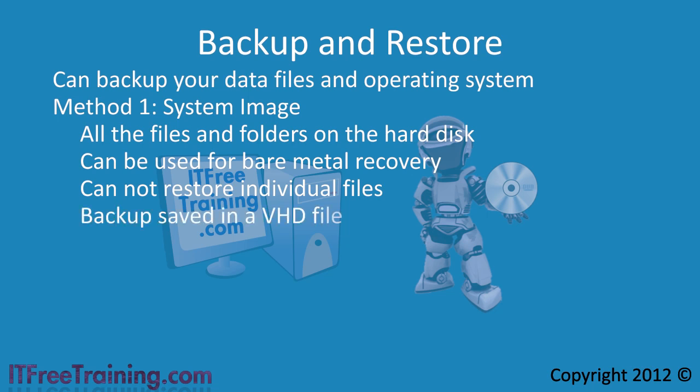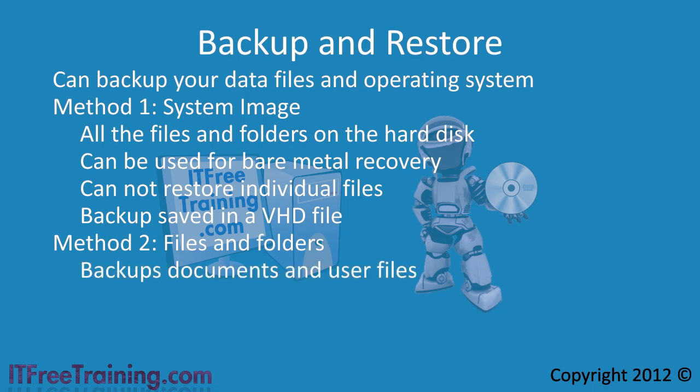The backup itself is stored in a VHD file. A workaround to restore single files from a system image is to mount the VHD file in the operating system and then extract the files you need from it with Windows Explorer. This is not the most user friendly way of restoring files from a backup for the average user. To have a more user friendly backup, Windows 7 also allows you to backup individual files and folders, giving you a simple way of backing up documents and user files.